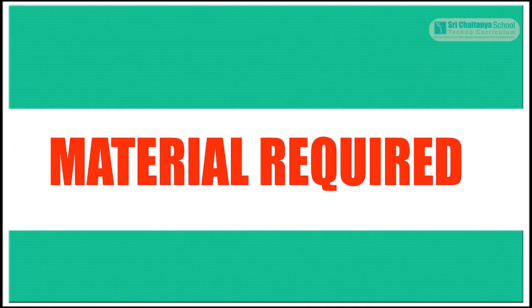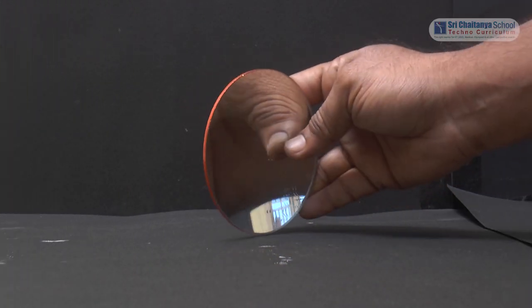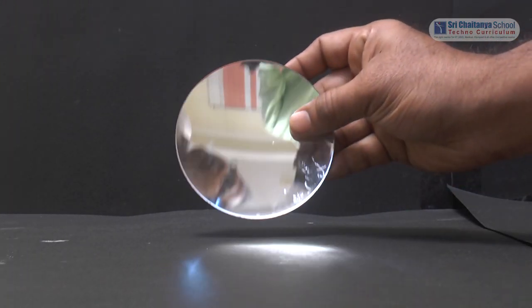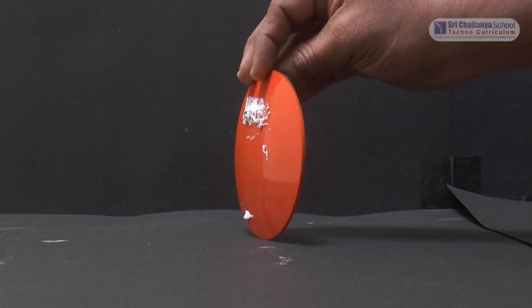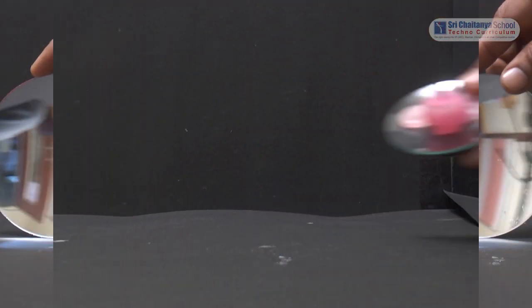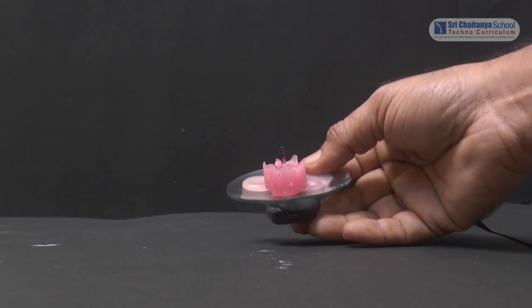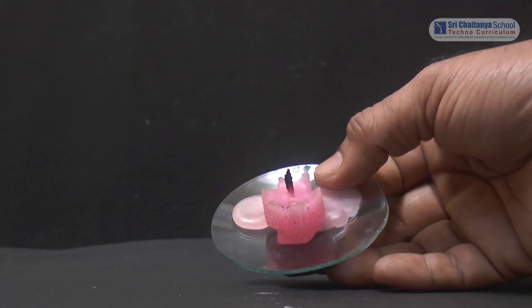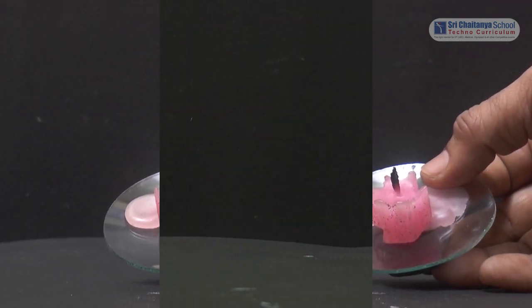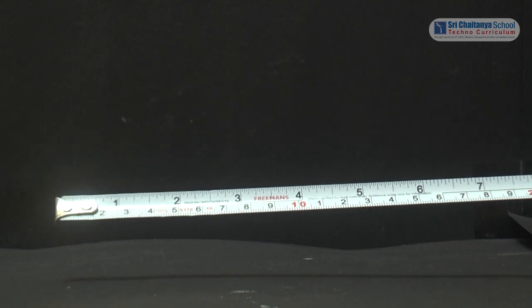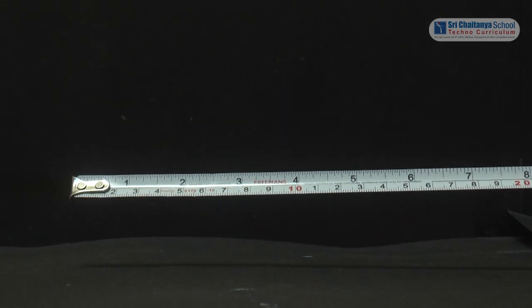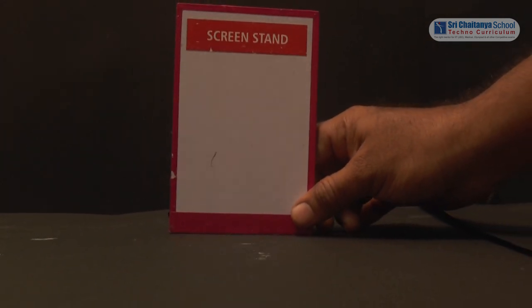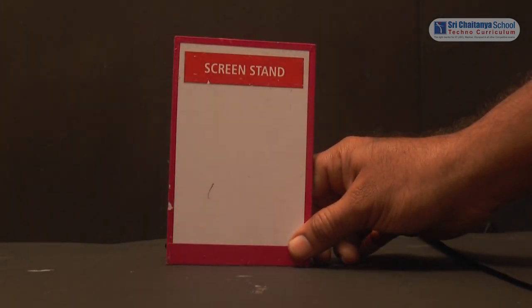To conduct this experiment, the materials required are a concave mirror of known focal length, a candle, a measuring tape, and a screen stand to trace the image.